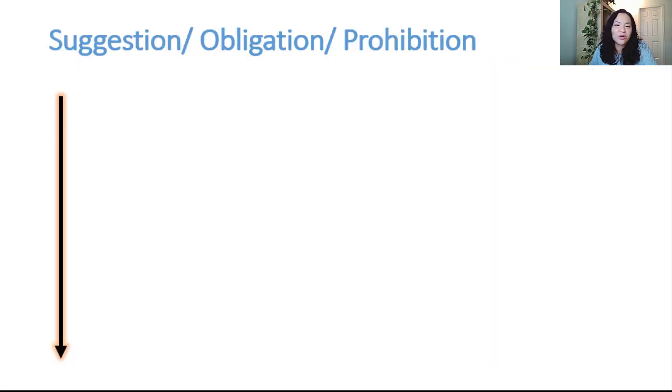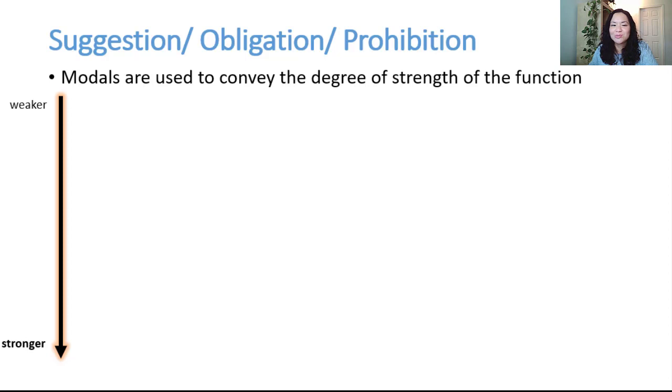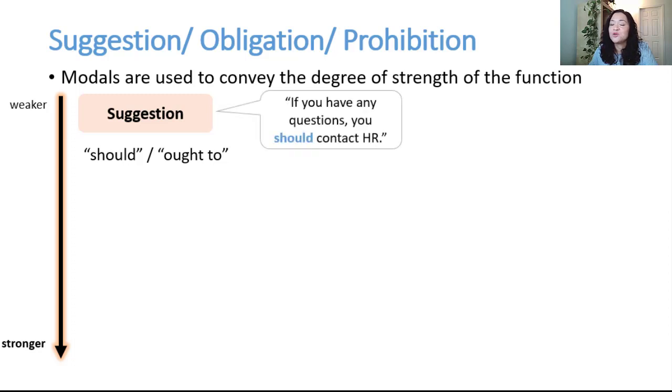Suggestion, obligation, prohibition. When we reach suggestion, obligation, and prohibition, modals play a role in how strong the function is. For giving suggestions or advice, we use should or ought to, although just to note that ought to is not used that much in North America. If you have any questions, you should contact HR.